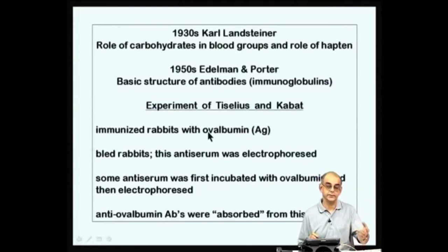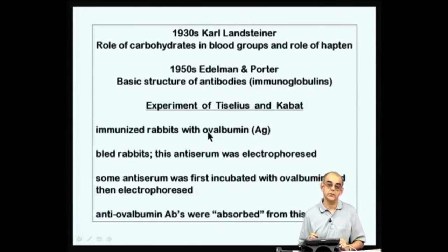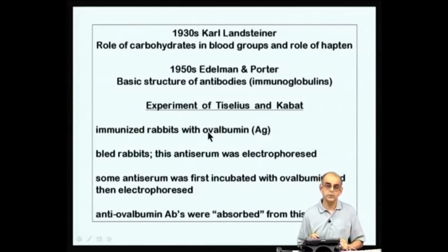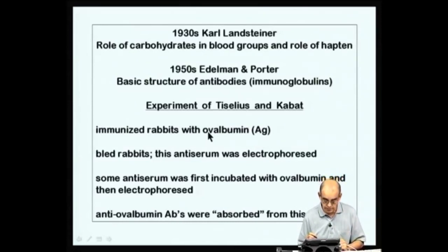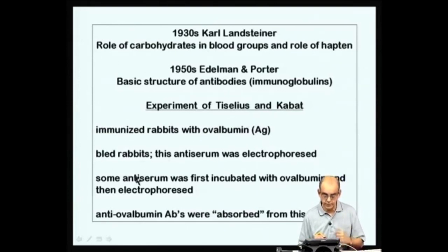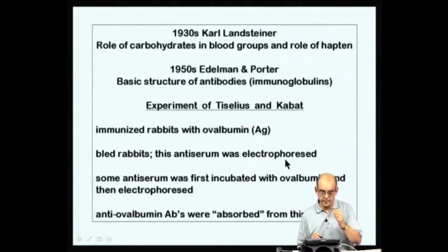Ovalbumin was another convenient antigen which you could get from eggs. Another famous antigen is called KLH — keyhole limpet hemocyanin. Limpet is a bivalve and hemocyanin is the blood pigment available in these bivalves. Keyhole is a beach, and therefore they would take bivalves washed up on the beach and extract this blood pigment to use as antigens. After injecting ovalbumin, they bled these rabbits to have anti-serum available. This anti-serum they electrophoresed — subjecting it to electric current and separating the various components.